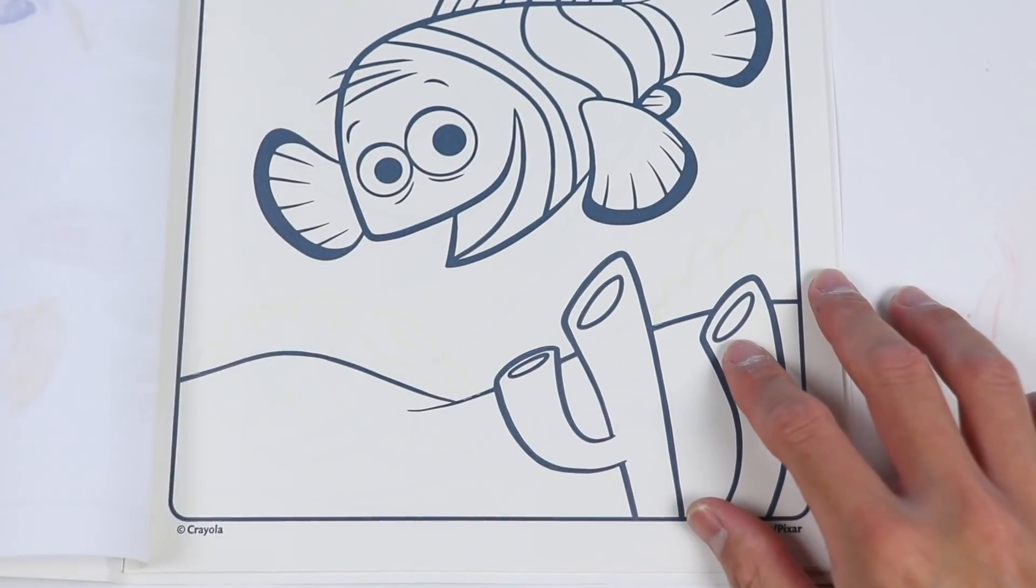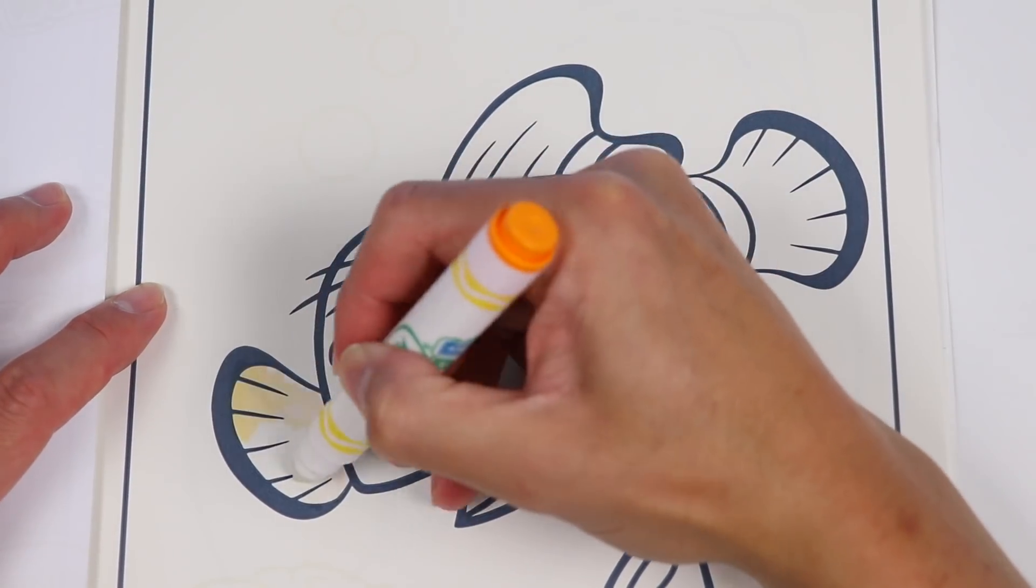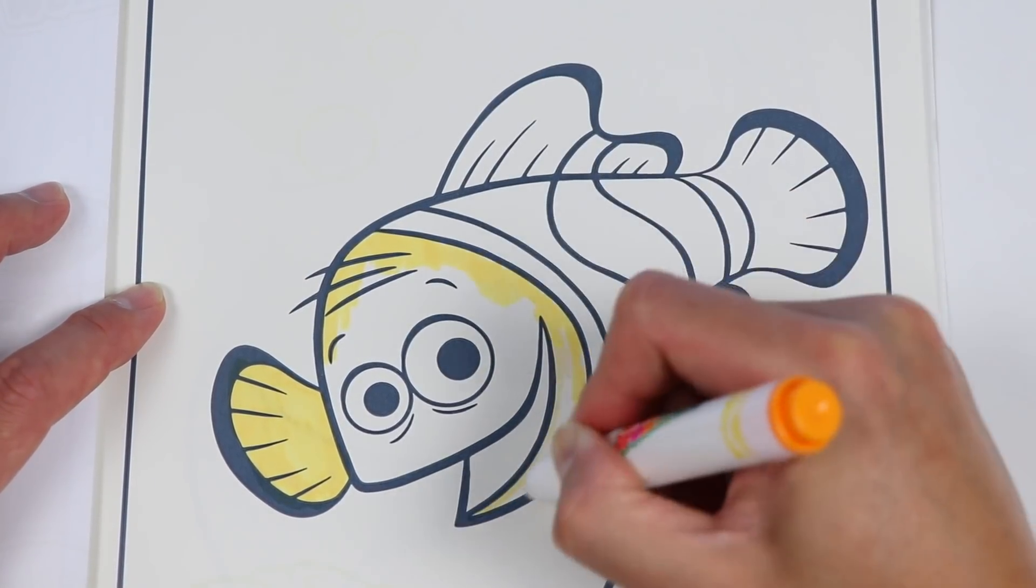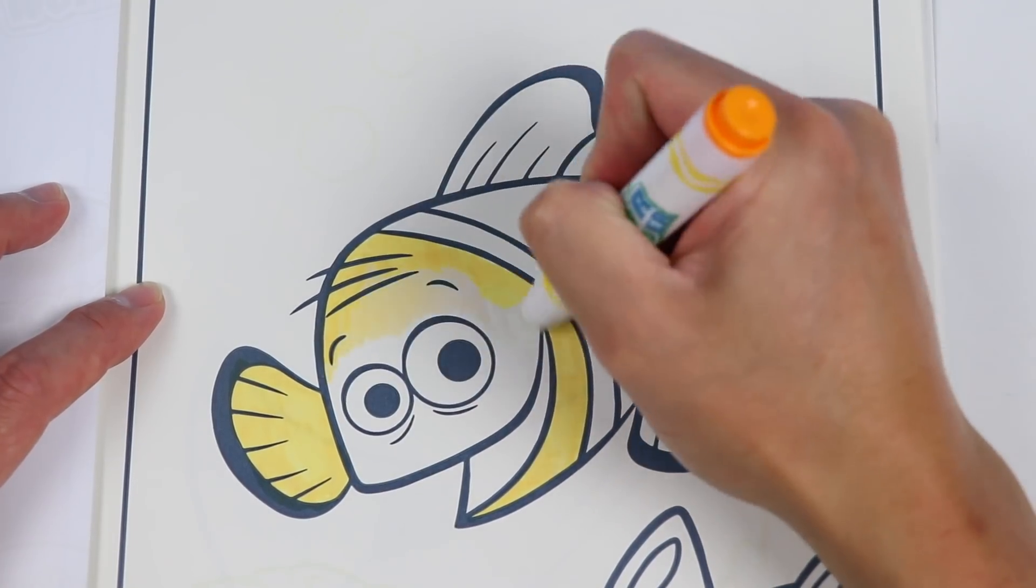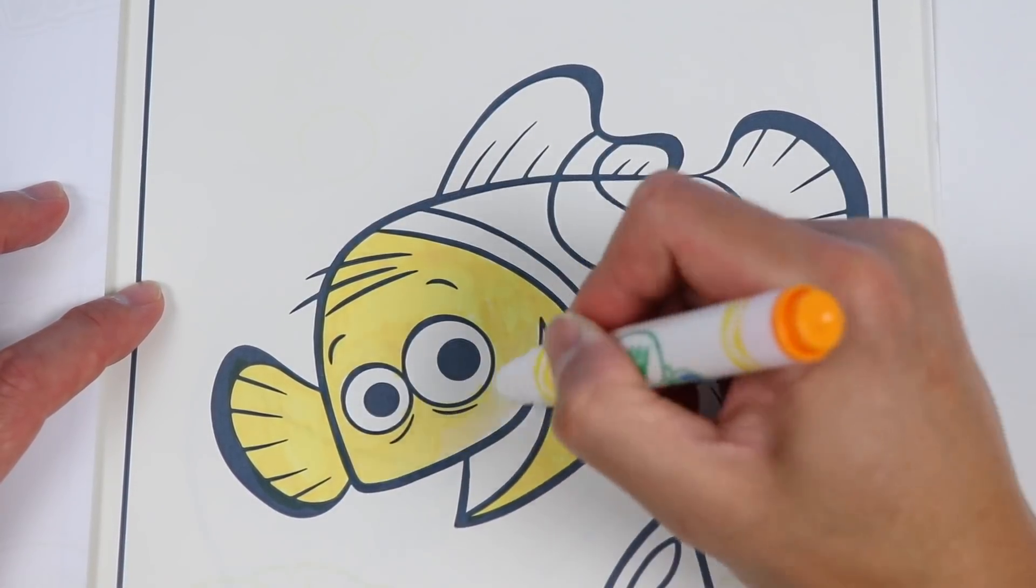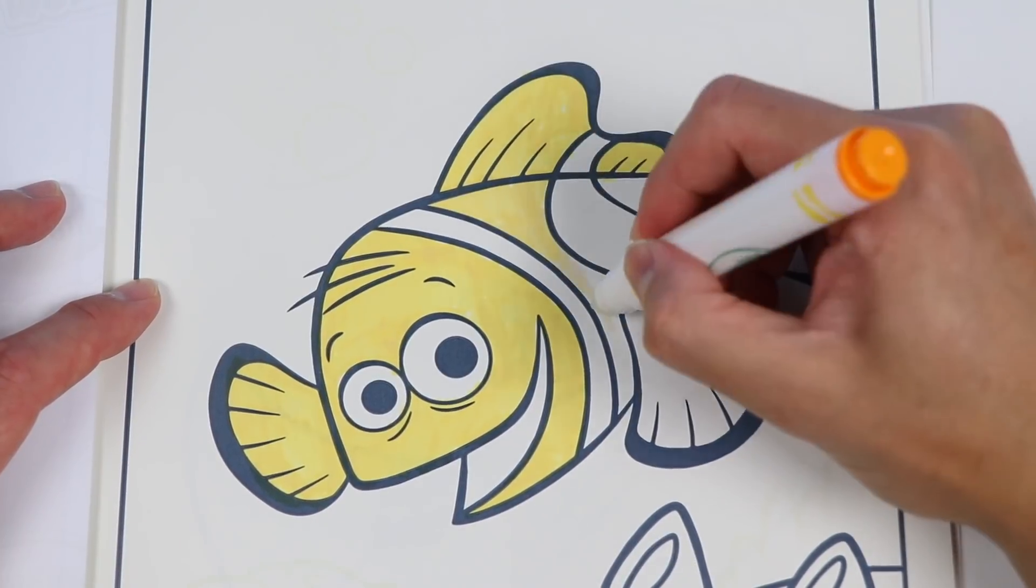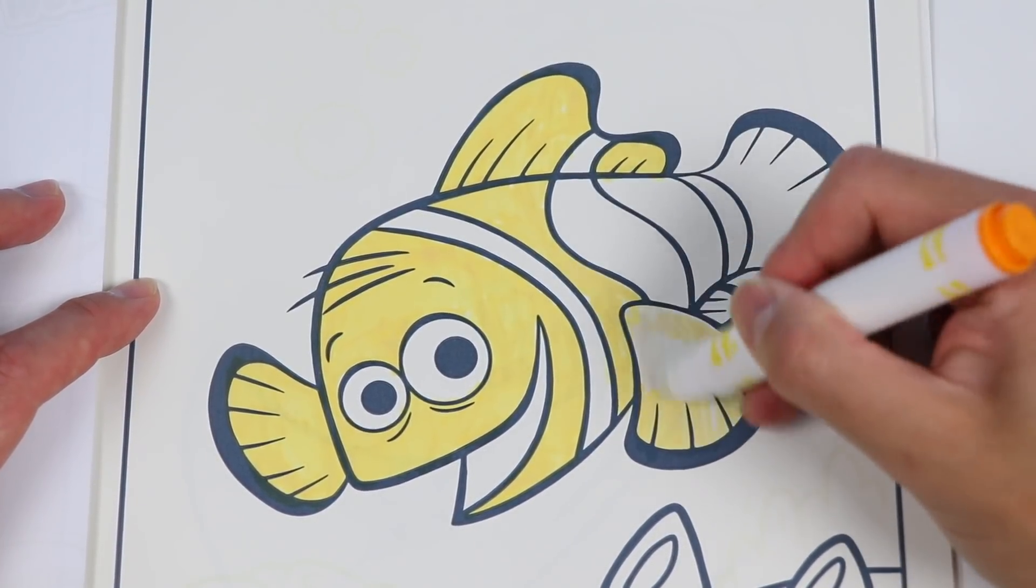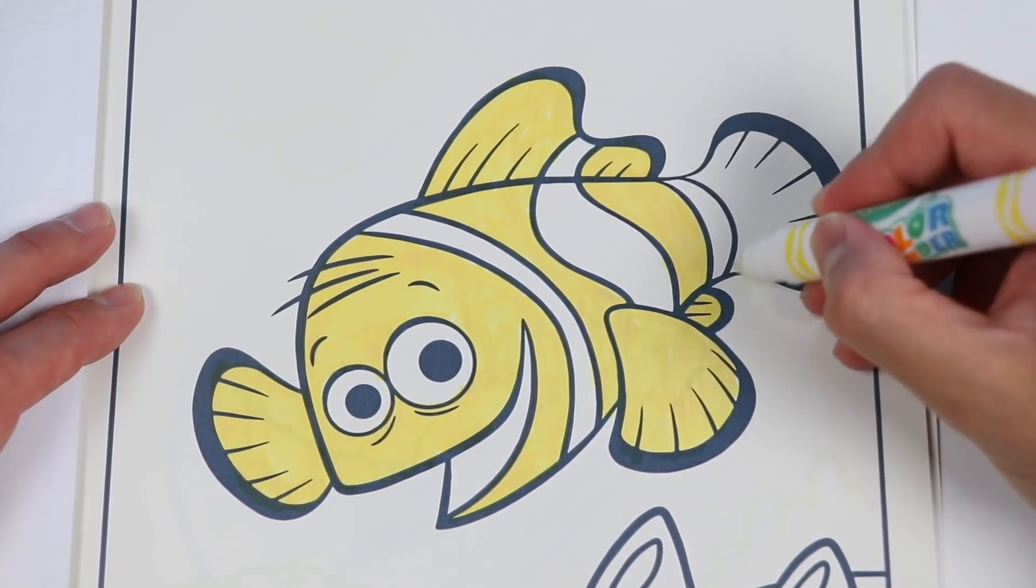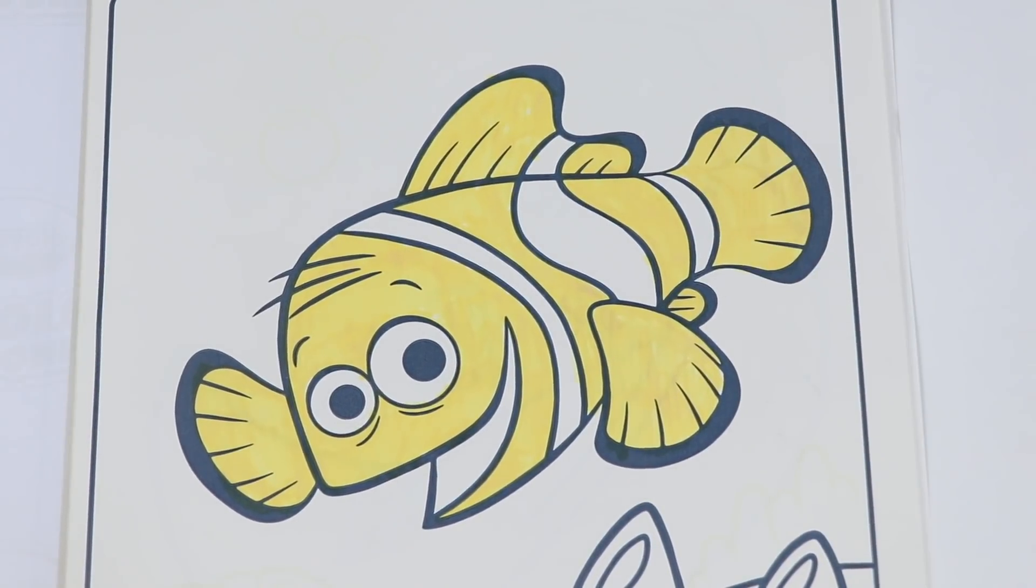Okay, let's work on the next page. This is Marlin, Nemo's dad. Start by using orange. Now let's use green.